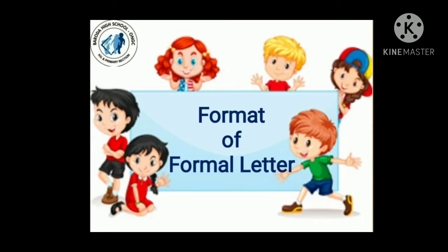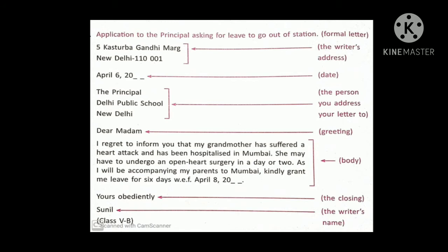Let us now quickly discuss the format of the formal letter. In this letter there is a question already given: write an application to the principal asking for leave to go out of station. It is already given to whom you are supposed to write the letter, and the question has also mentioned the reason for the letter. The first thing which you will write will be the writer's address.